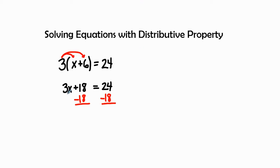So when we go ahead and simplify, we are going to bring down our 3x. 18 plus a negative 18 gives us 0, equals, then we have 24 minus 18 is 6.